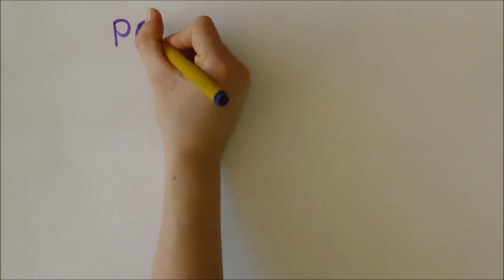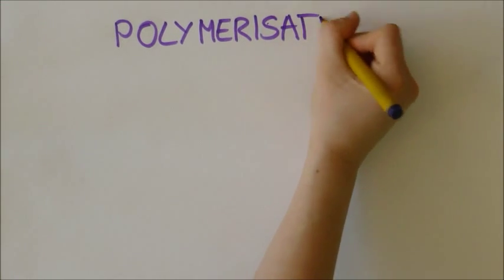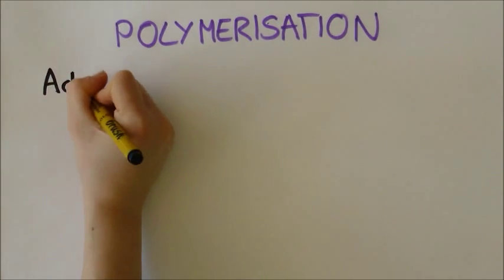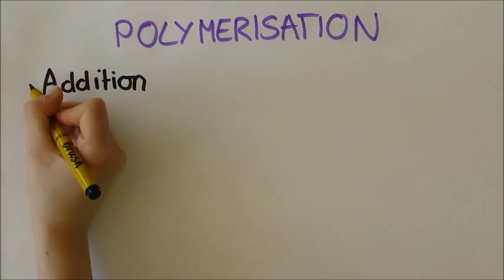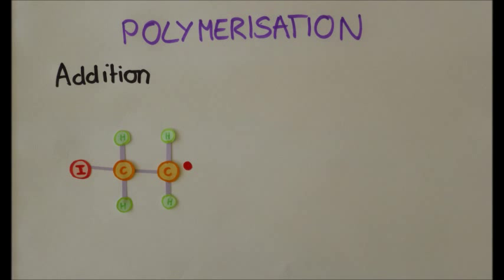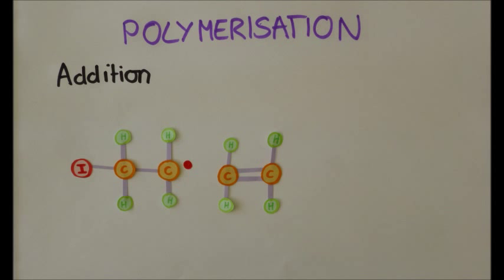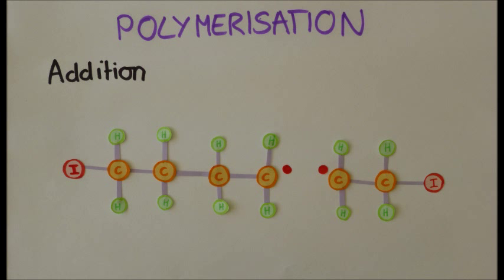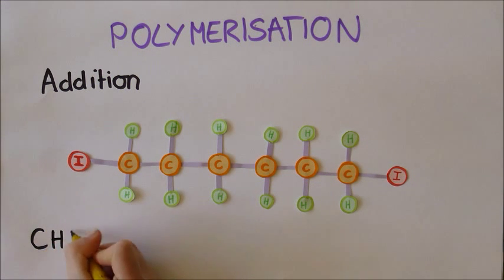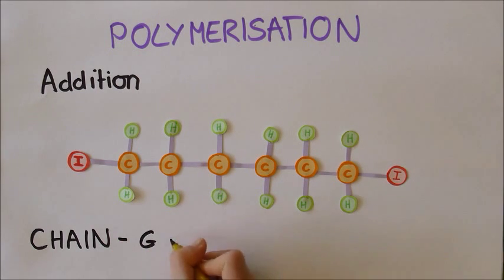There are two different types of polymerization reaction. The first uses an addition mechanism. An alkene comes into contact with a free radical which has an unpaired electron. This opens up the alkene's double bond, giving the carbon an unbonded radical electron. The reaction ends when two radical carbons meet and bond, forming the polymer. This is called chain growth polymerization.